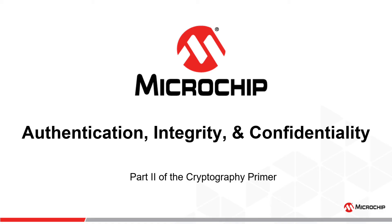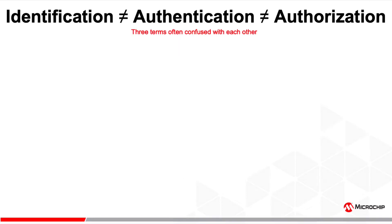This is part two of Microchip's cryptography primer. In this part we discuss authentication, integrity, and confidentiality. Let's look at a few terms which are often confused with each other. These three things should be at the forefront of our minds when we develop secure systems.